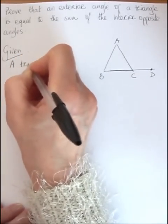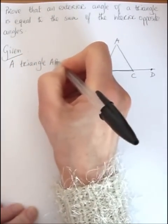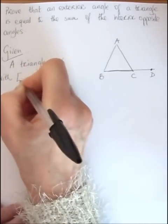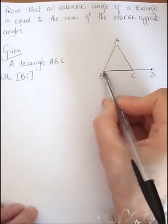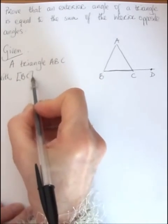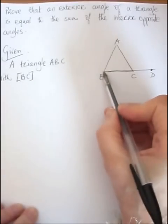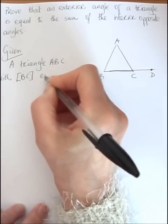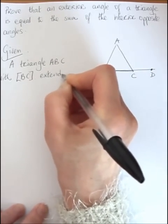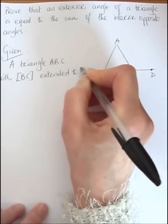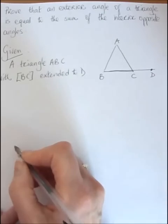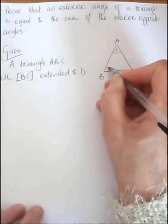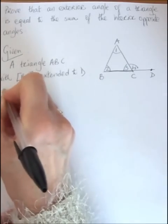So given a triangle ABC with the line segment BC. Again, remember these little square brackets means starts at B and stops at C. And I'm going to extend that now to D. Now I'm going to label the angles to make it easy to refer to them. So I'm going to state that.